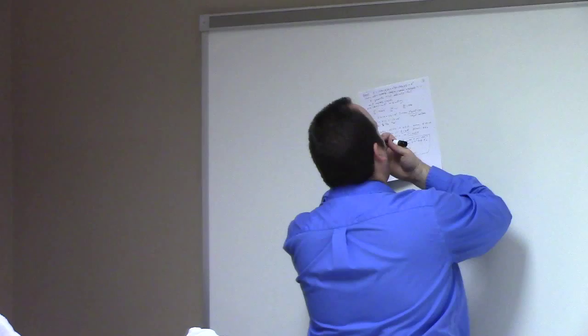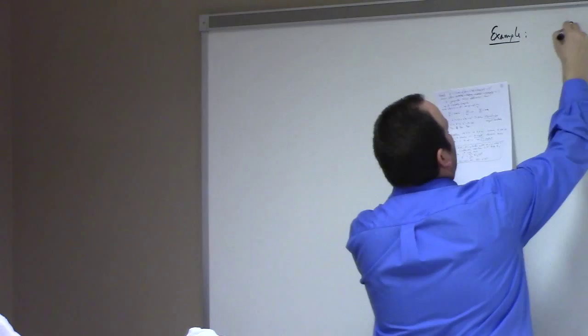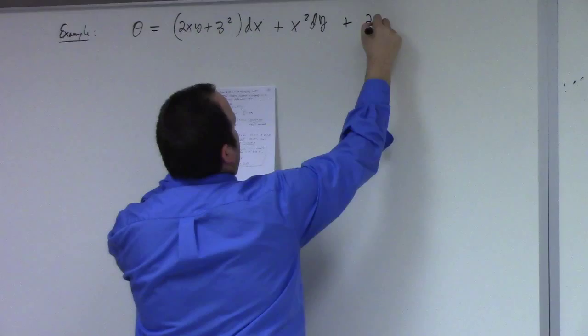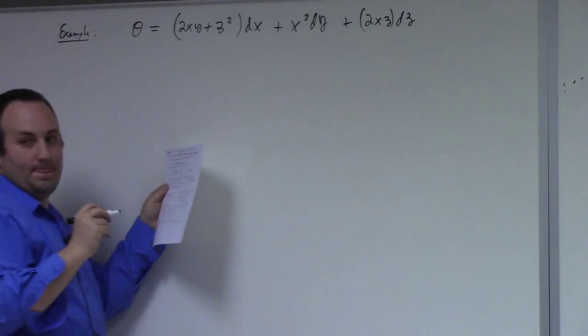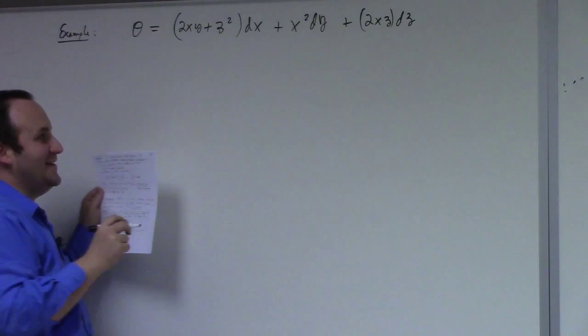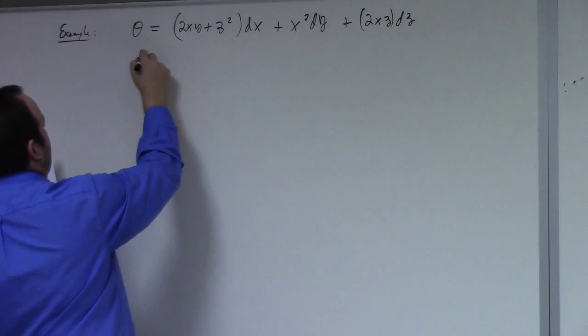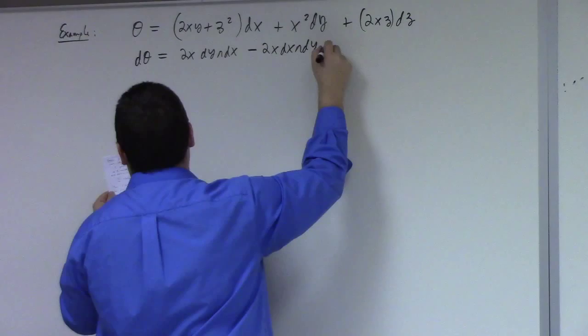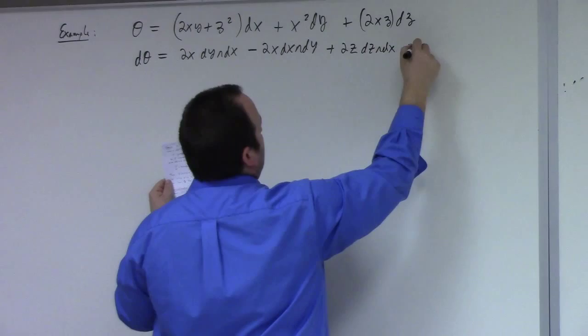So here's an example. Let θ = (2xy + z²) dx + x² dy + 2xz dz. Compute dθ: we get 2x dy ∧ dx − 2x dx ∧ dy + 2z dz ∧ dx + 2z dx ∧ dz.